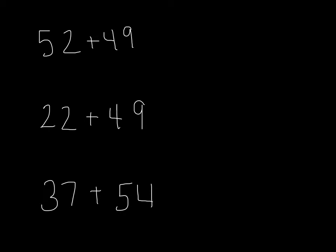So for the first one, 52 would round to 50, plus 49 would round to 50. So our estimate for this problem is 100. How did we know that I needed to round both of these numbers to 50?